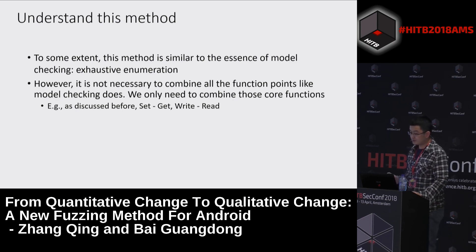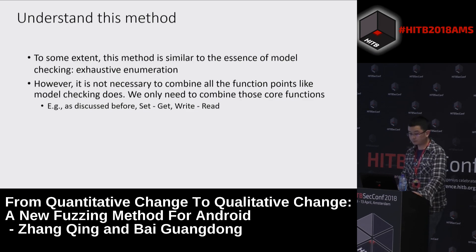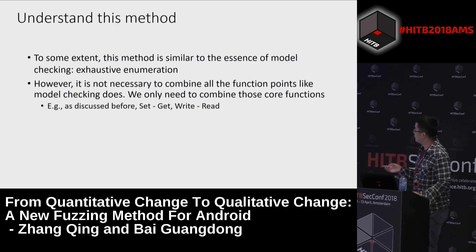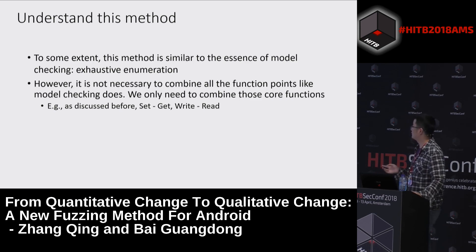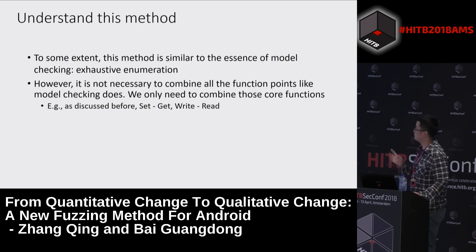To some extent, this method is similar to the essence of model checking. Some may say the state space will be huge if we consider all combinations. However, it's not necessary to combine all function points the way model checking does. We only need to combine those core functions — set, get, write, and read. For now, we only did about one to ten combinations.